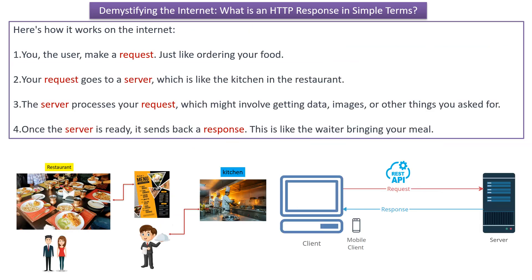Here we will see how HTTP response works on the internet. Step 1: you make a request, just like ordering your food. Step 2: your request goes to the server, which is like the kitchen in the restaurant. Step 3: the server processes your request, which might involve getting data, images, or other things you asked for.